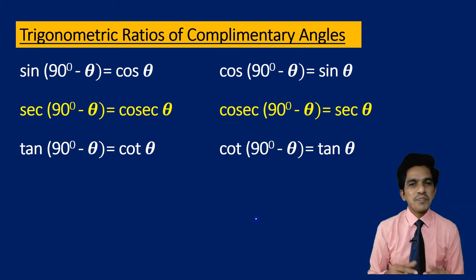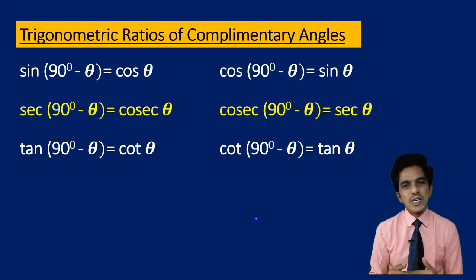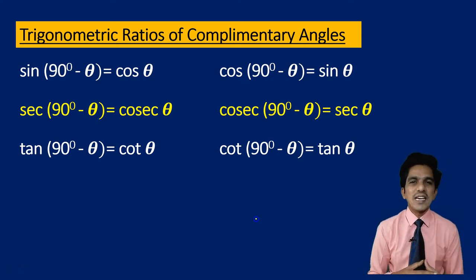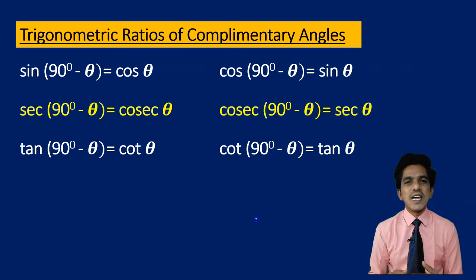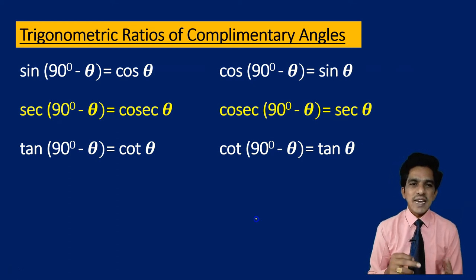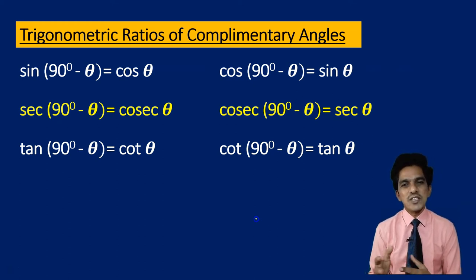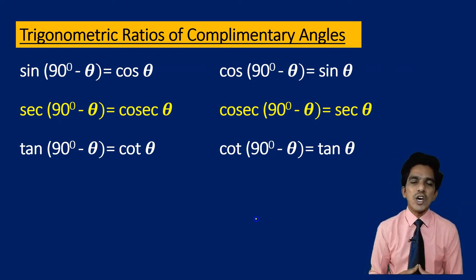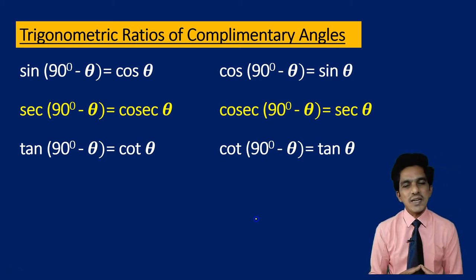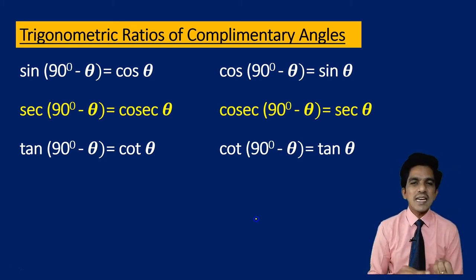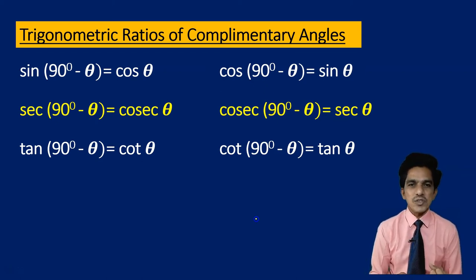Sine of an angle is equal to the cosine of its complementary angle. Similarly, cosine of an angle is equal to the sine of its complementary angle. That is, sine theta can be written as cos 90 degrees minus theta, or cos theta can be written as sin 90 degrees minus theta. Similarly, tan and cot are complementary angles of trigonometric ratios.